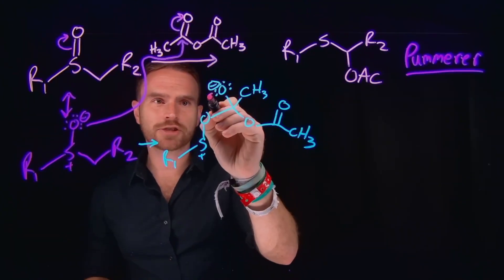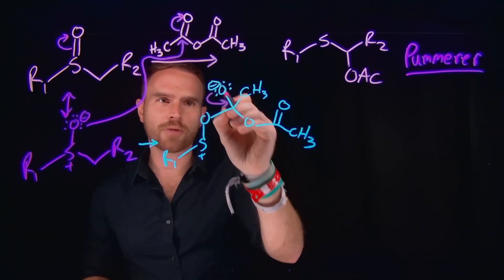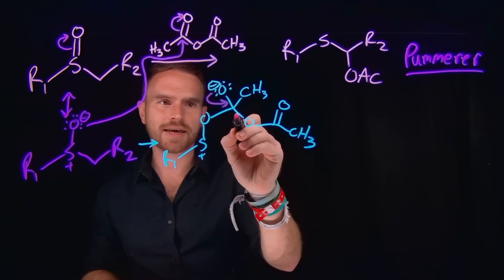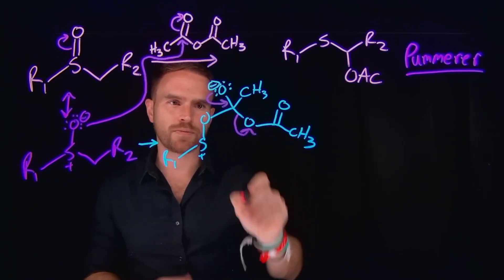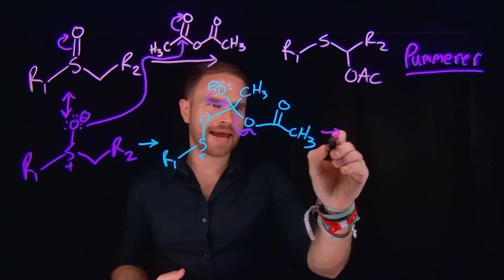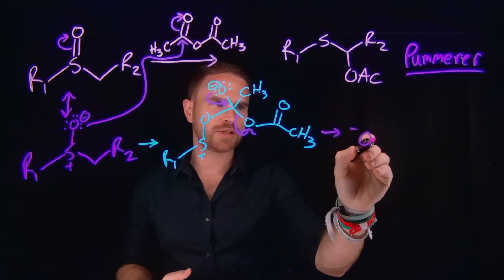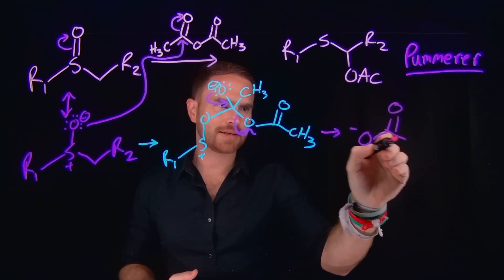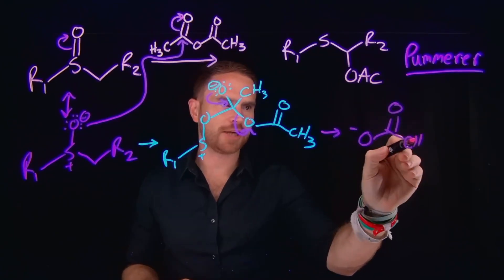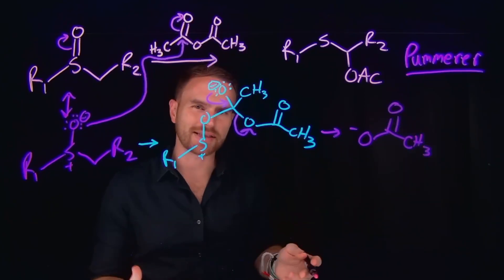Because what can happen now is those electrons can come down to reform our carbon to oxygen double bond, and that's going to kick off the rest of this acetate group as a leaving group. So I'll draw in that acetate because we're actually going to come and use it later as a reactant as part of this overall transformation. But this is the acetate leaving group that leaves.